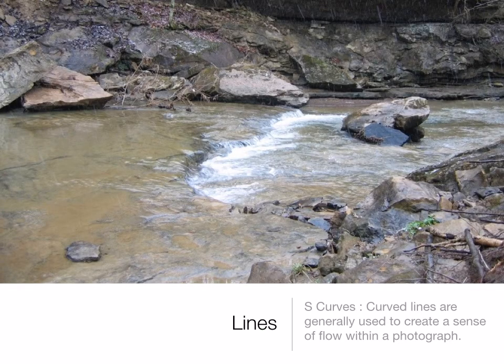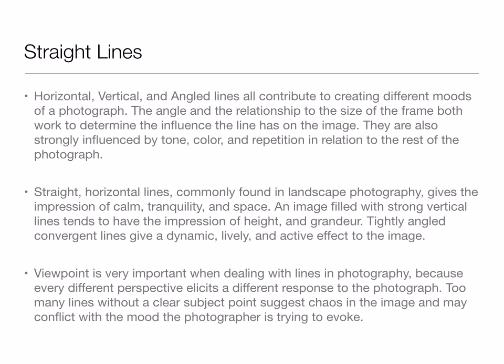Here we have a curve in the riverbed. Notice how it goes down in the middle — we have the breaking of the water where it falls off. It's just an appealing looking image; it's not flat, it gives some depth and texture. Straight lines — horizontal, vertical, and angled lines all contribute to creating different moods of a photograph. It can create a feeling of motion, speed, quickness, all sorts of things. They are also strongly influenced by tone, color, and repetition.